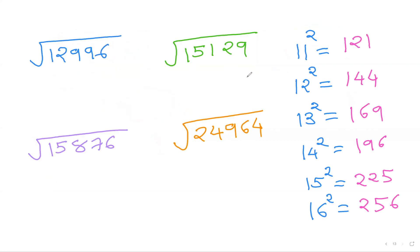Now let's tackle five-digit square roots. The process is very similar, but you also need to know a few extra squares: 11² = 121, 12² = 144, 13² = 169, 14² = 196, 15² = 225, and 16² = 256. If you know these, you're ready to find the square root of five-digit numbers.